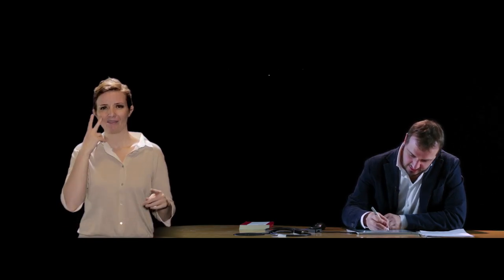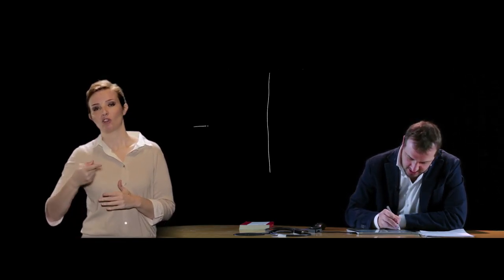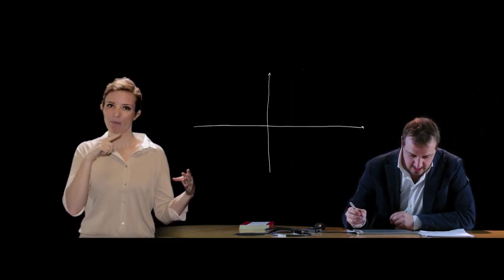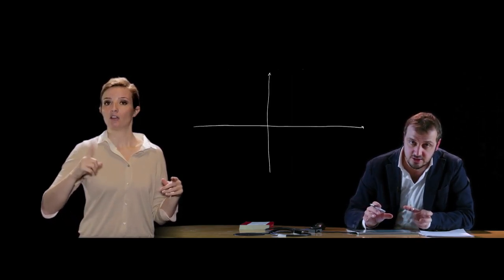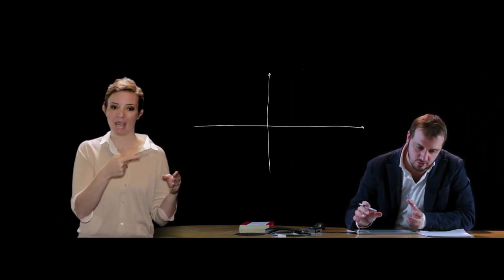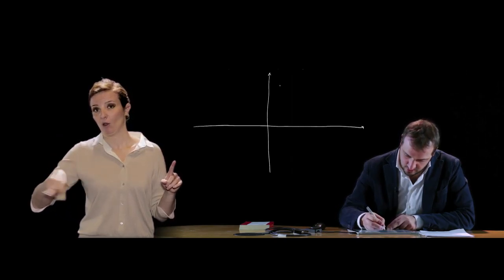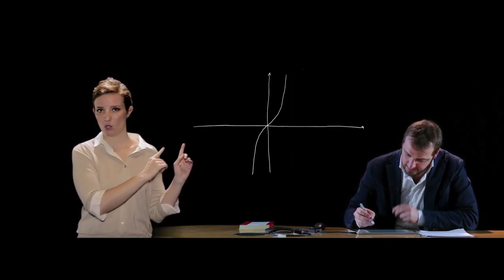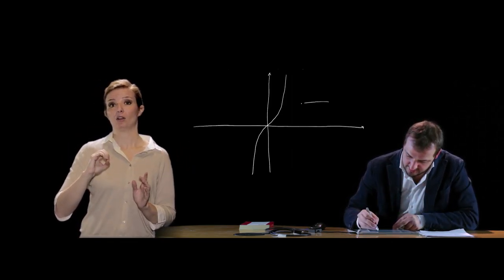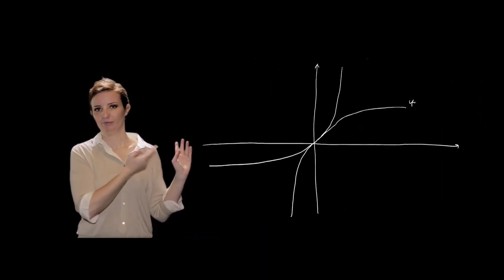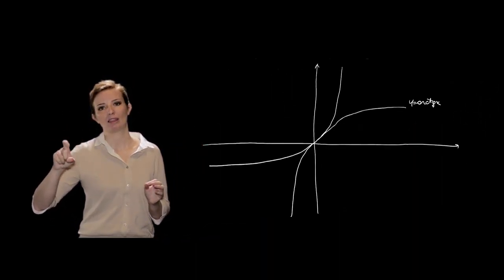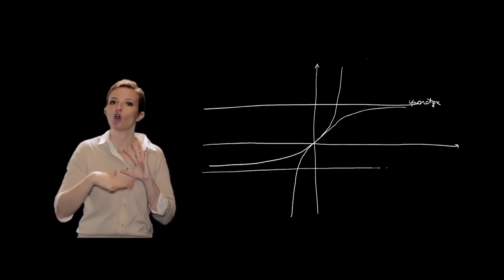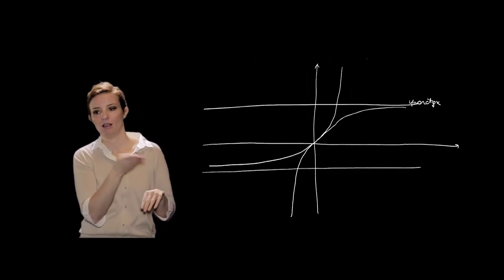Vediamo rapidamente il grafico dell'arco tangente. Si limita la tangente all'intervallo (−π/2, π/2): in questo intervallo la tangente ha un determinato andamento, e la funzione arco tangente ha un andamento corrispondente. Il dominio è ogni x ∈ ℝ, mentre il codominio è limitato tra gli asintoti −π/2 e π/2.